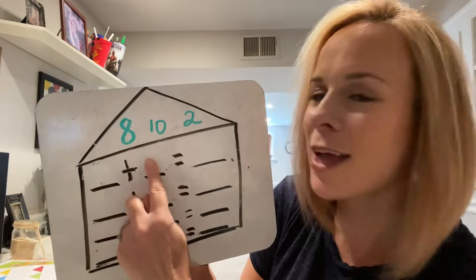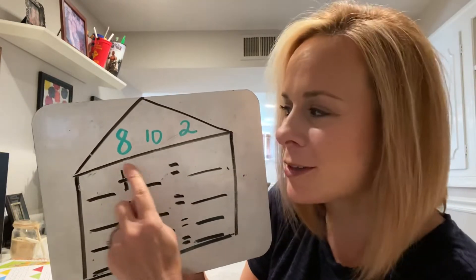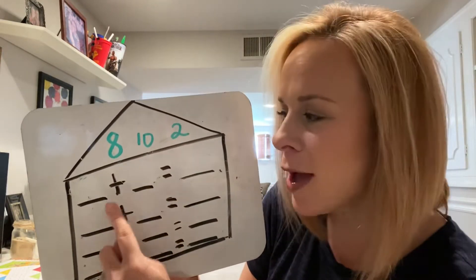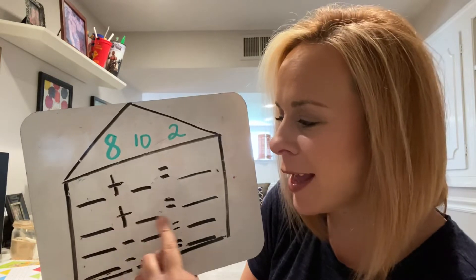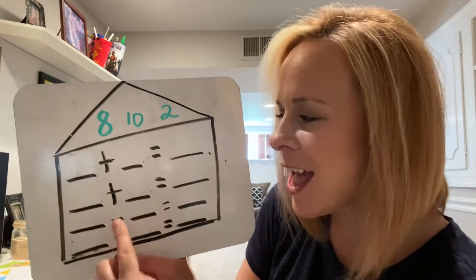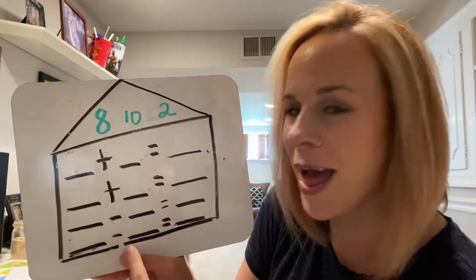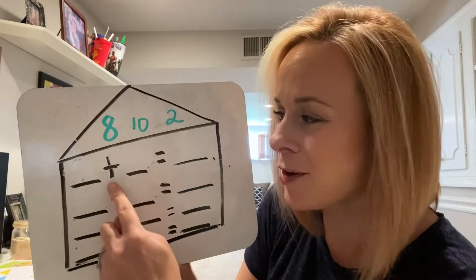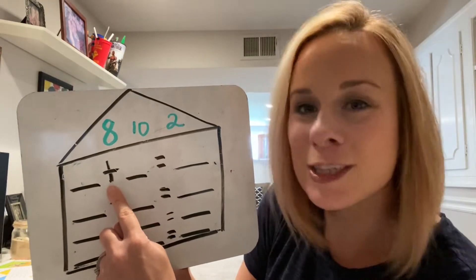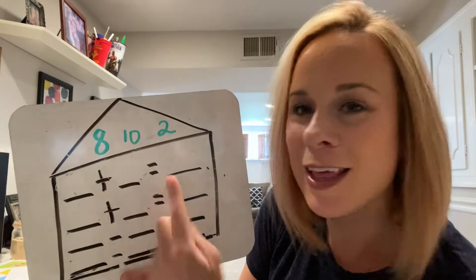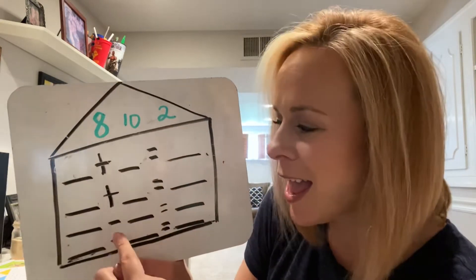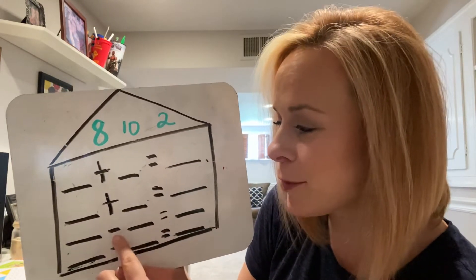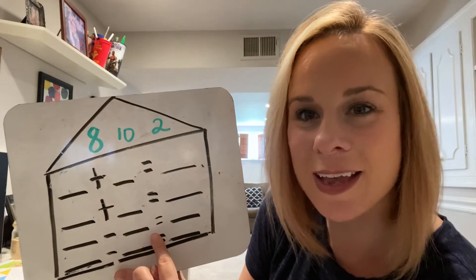You can see that inside my roof I have three different numbers: 8, 10, and 2. I also have two blank addition sentences and two blank subtraction sentences. I know this is an addition sentence because it has the plus and the equal sign, and I know this is a subtraction sentence because it has the minus and the equal sign.